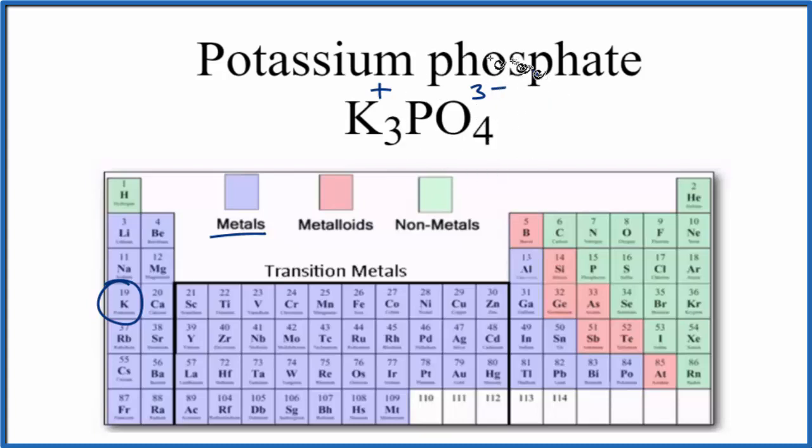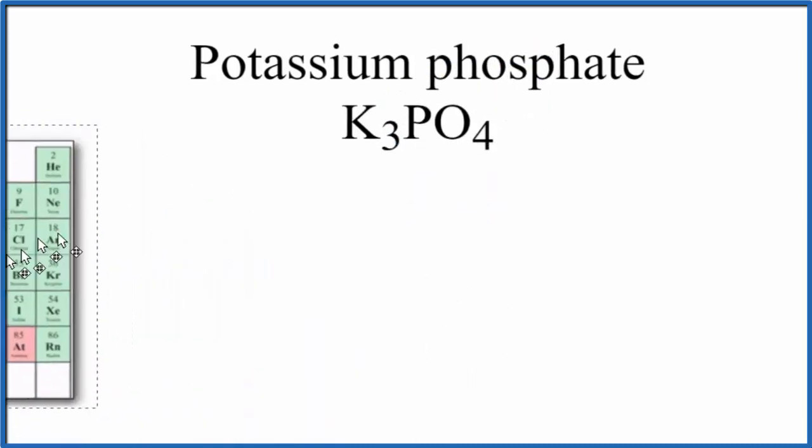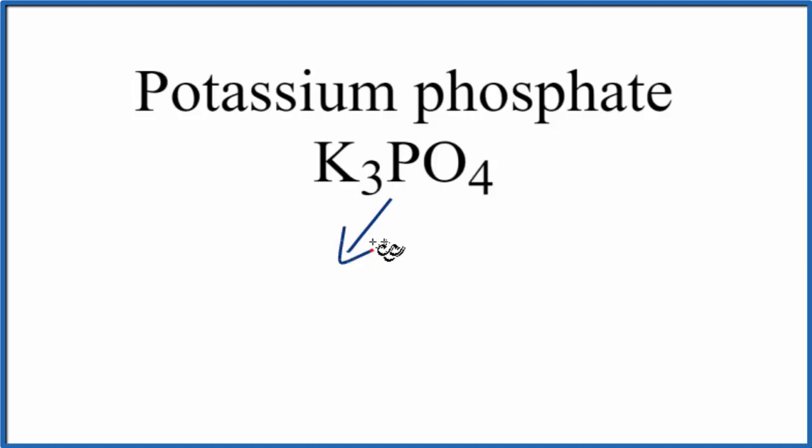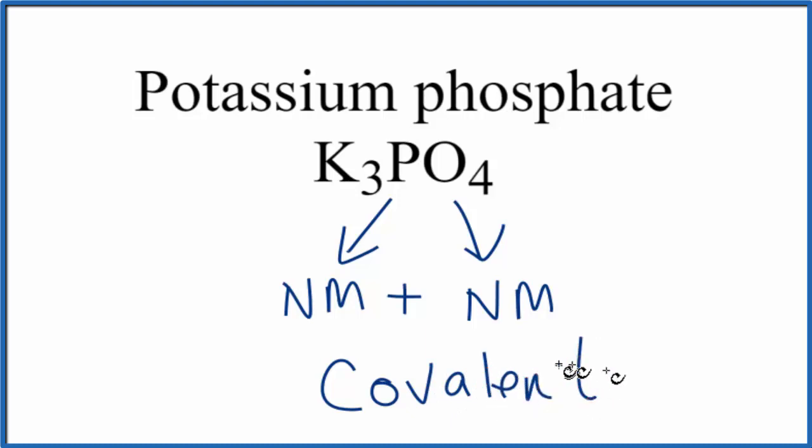Let's talk about the phosphate ion just for a moment. So we said phosphorus, that's a non-metal. And then oxygen, those are non-metals as well. So you have two non-metals, non-metal plus non-metal, that gives us a covalent bond, also called a molecular bond. So the bond between the phosphorus and the oxygen atoms, those bonds are covalent.